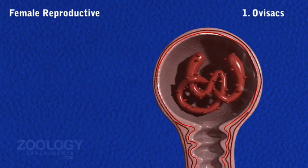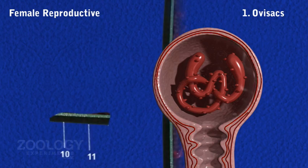Ovisacs: There is a single pair of hollow globular coelomic sacs situated ventrally in the 11th segment, one on either side of the ventral nerve cord.